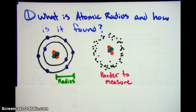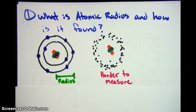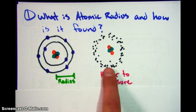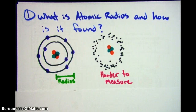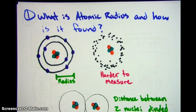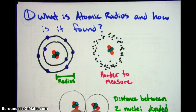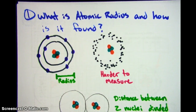So what scientists have had to do is figure out a new method. What they decided to do is something pretty clever. They said, what if we take two of these atoms and bond them together — this is a rough sketch — and instead of measuring from the nucleus to the outside electron, because those are really hard to tell where they are, what if instead we measure from one nucleus to the other and then just divide that in half? That should be the radius on average. And so that's exactly what they did. That's what atomic radius is and how we have found it.